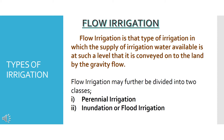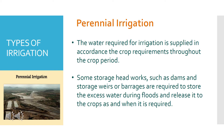Flow Irrigation is that type of irrigation in which the supply of irrigation water is conveyed onto the land by gravity flow — from a higher level position to a lower level. Flow Irrigation is classified as perennial irrigation or inundation (flood) irrigation. In perennial irrigation, water required is applied in accordance with the crop requirements throughout the crop period.